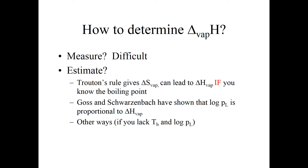In many cases, what we need to do is estimate the value of delta H of vaporization. There are a couple of different ways to do that. One is to use something called Trouton's Rule, which I'll talk about in a minute. Probably the easiest way is to use a technique that Goss and Schwarzenbach developed — Schwarzenbach being one of the co-authors of your textbook. They showed that the log of the vapor pressure is proportional to delta H of vaporization, so if you just know the vapor pressure, you can back out a pretty good estimation of delta H of vaporization.